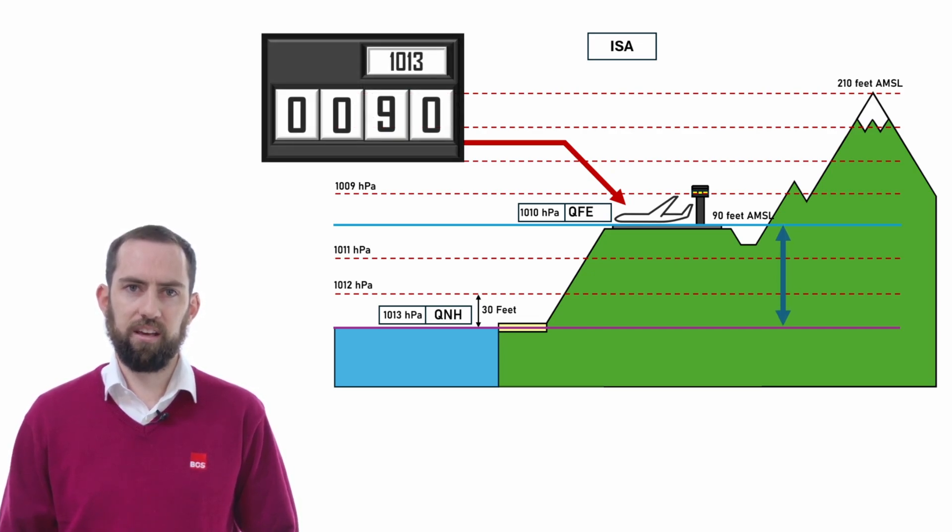If we change the subscale setting to the QNH, we are saying that we want our altimeter to read zero at the pressure level of 1013, which also happens to be our sea level reading. If our altimeter is currently detecting a static pressure of 1010, it will be detecting a difference of three hectopascals between these pressure levels. Three hectopascal difference multiplied by 30 feet per hectopascal equals 90 feet. This shows us that if we set the QNH on our altimeter, it will read field elevation.